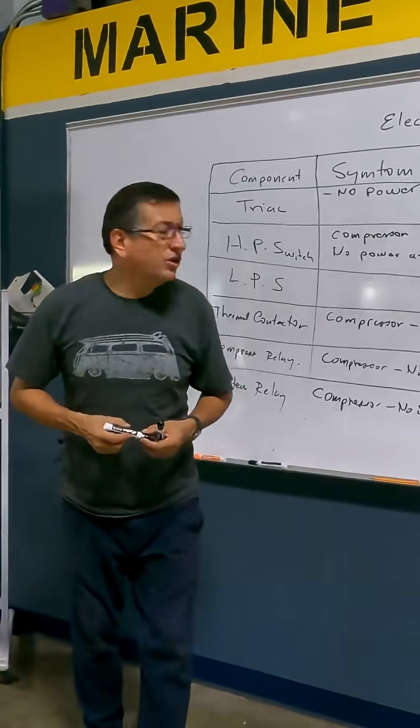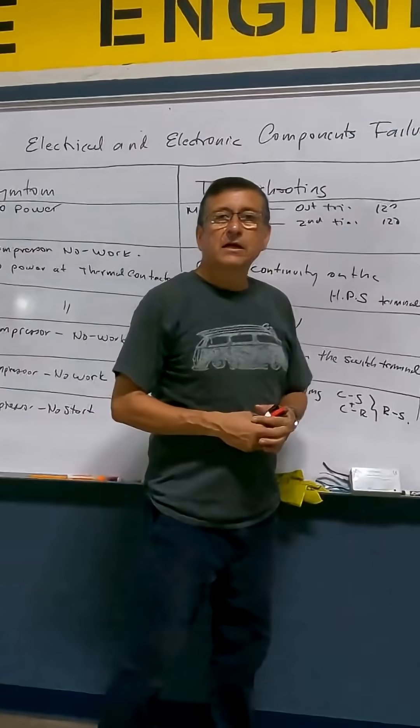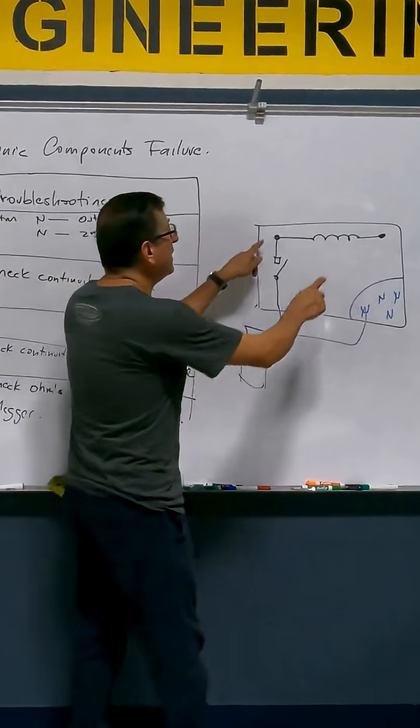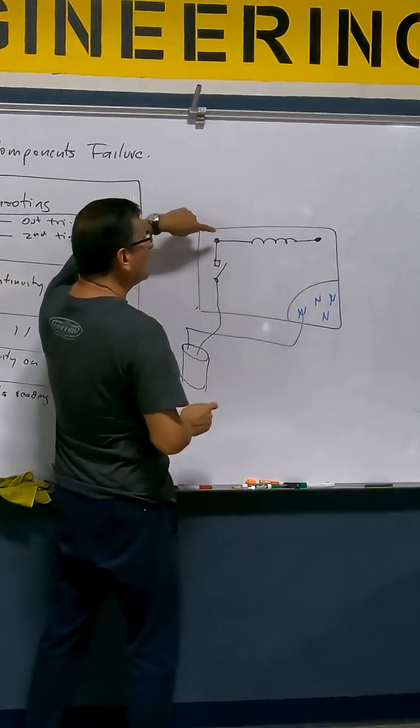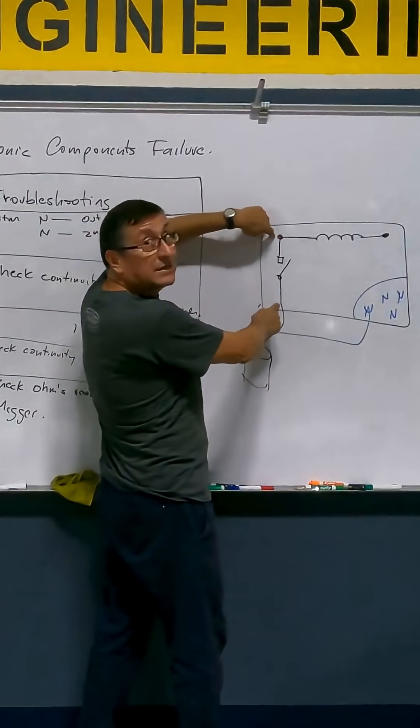What is the procedure to verify the system relay? In normal conditions between this and this terminal you have continuity. In normal condition with no power between this and this?